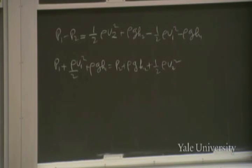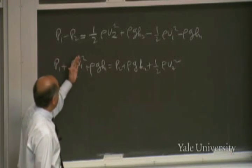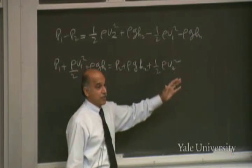This is nothing other than the law of conservation of energy applied to unit volume. If you take 1 meter cubed of the fluid, its mass is rho times 1. So this is really a mass of 1 cubic meter of the fluid. This is kinetic energy, that's the potential energy, that's the kinetic and that's the potential.